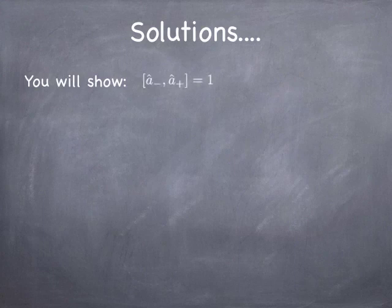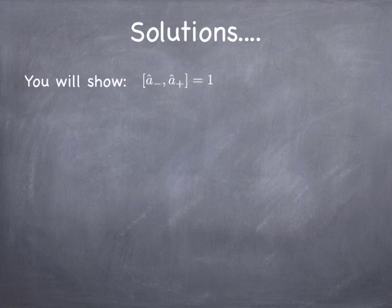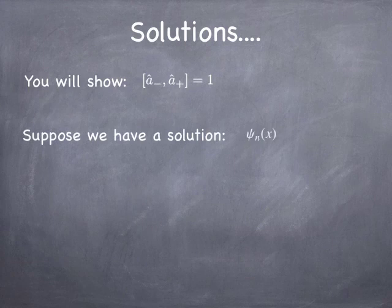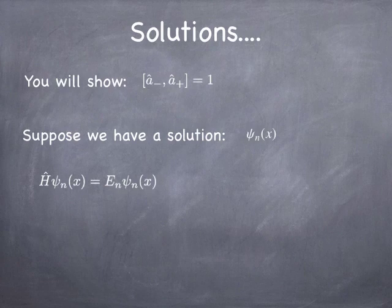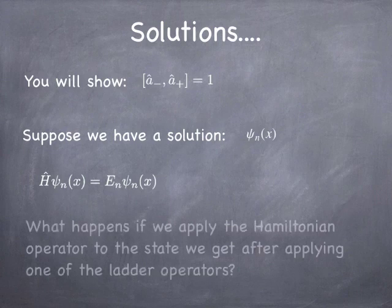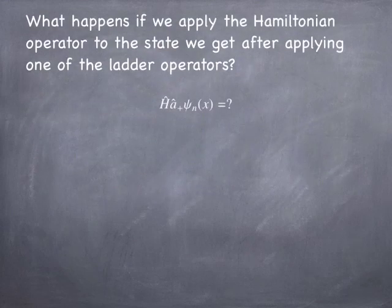In class, you're going to show that the commutator of a-minus and a-plus is also not zero — that they don't commute with each other — but that commutator is just going to be one. We're going to use that fact to find new solutions to the simple harmonic oscillator if we can discover one. So let's suppose we have a solution ψ_n, and we know that solution satisfies the time-independent Schrödinger equation — in other words, the Hamiltonian acting on ψ_n is the energy of the n-th state times ψ_n. What happens if we apply the Hamiltonian to the state we get after applying one of the ladder operators? Let's apply the Hamiltonian to a-plus on ψ_n and see what we get.